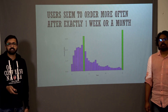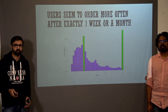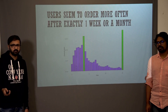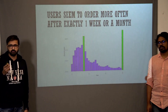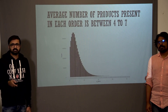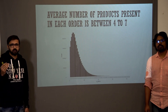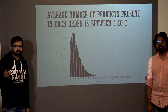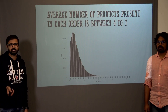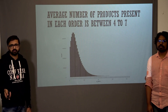This data tells us the number of days gap between successive orders. We aggregated the data for all users and saw that most users order on a weekly or monthly basis — the two tallest bars correspond to day 7 and day 30. This chart shows the position of products in a user's cart and how many products are in a cart on average. Most users have between 5 to 10 products in their cart per order.